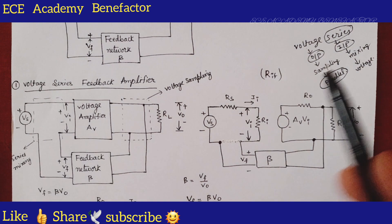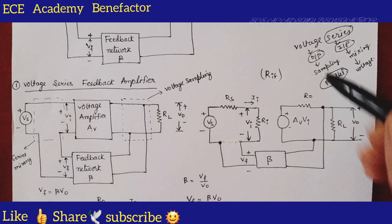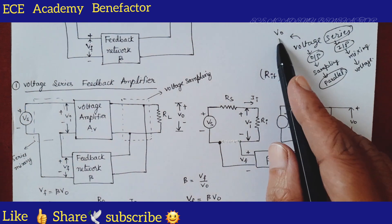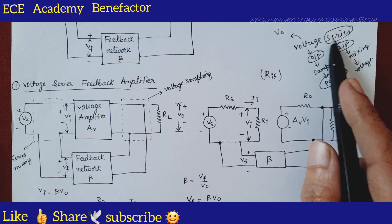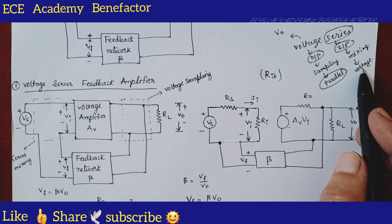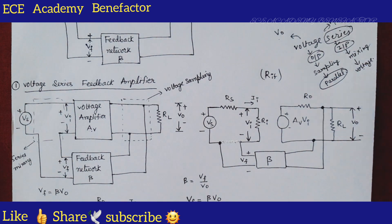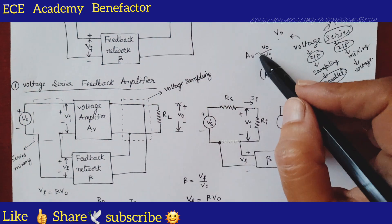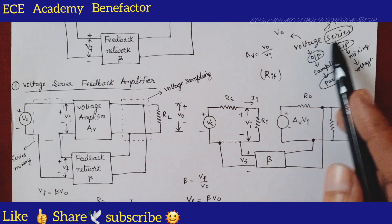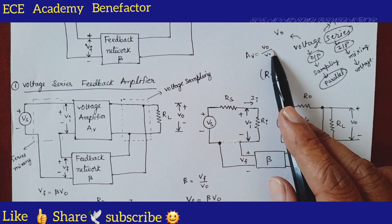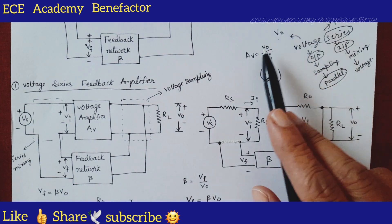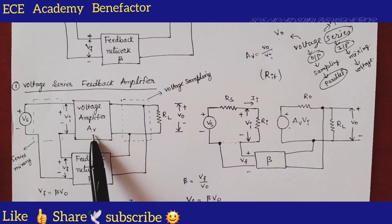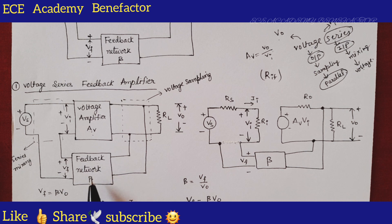So how do we decide what type of amplifier to use for voltage series? The first word is 'voltage,' meaning Vnaught — the output voltage. 'Series' refers to the input connection, meaning series mixing at the input side with voltage mixing, so at the input we also have Vi. The ratio of Vnaught by Vi is the voltage gain AV. Based on this name, we take a voltage amplifier of gain AV and a feedback network of ratio beta.